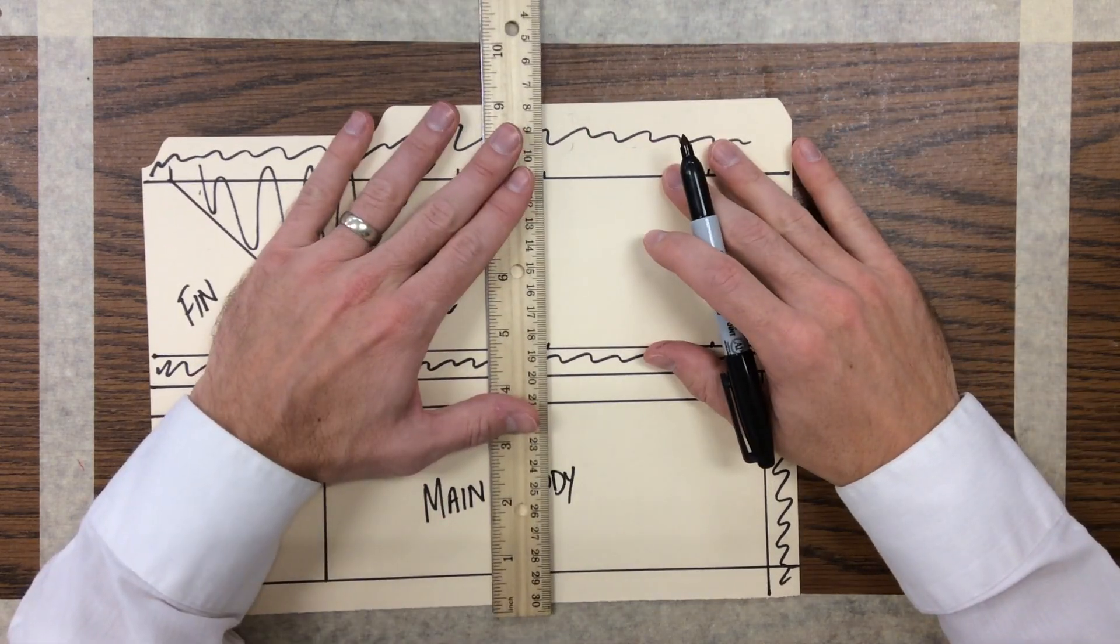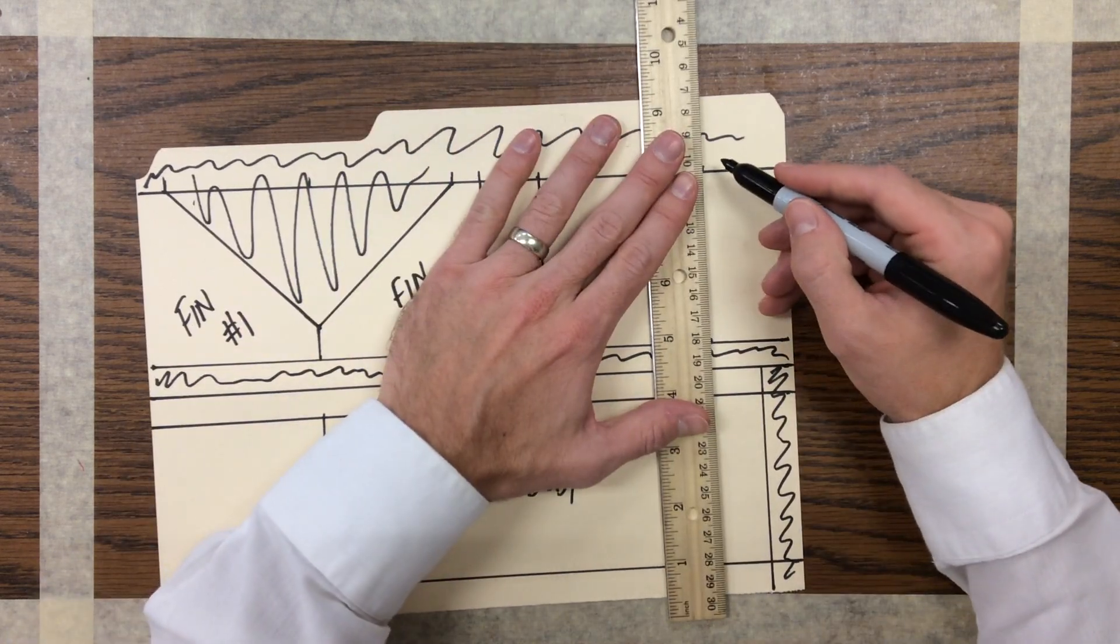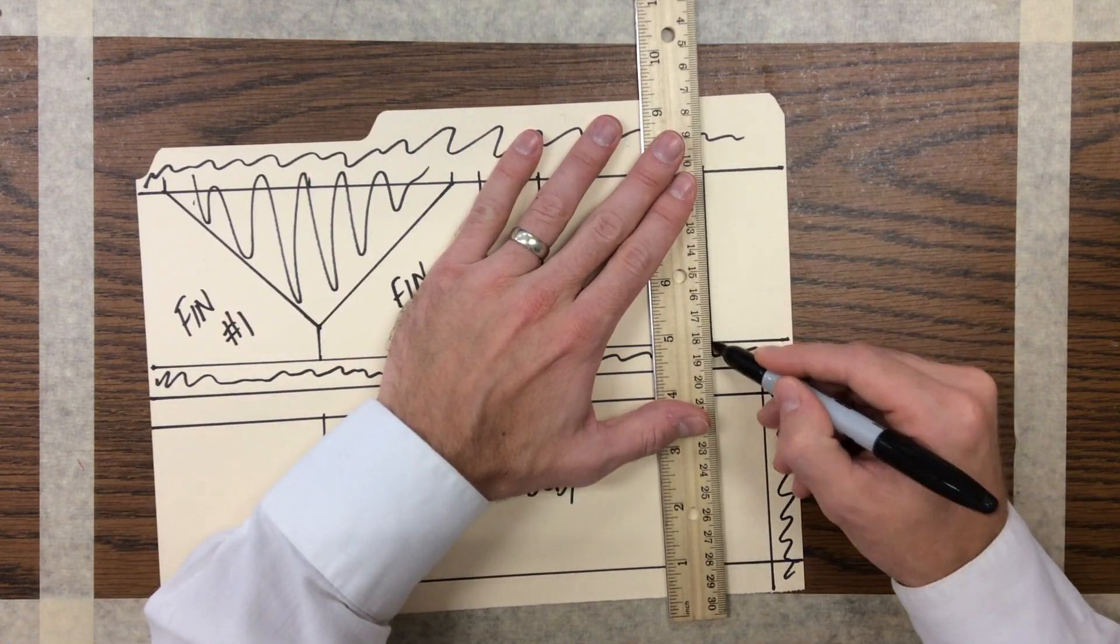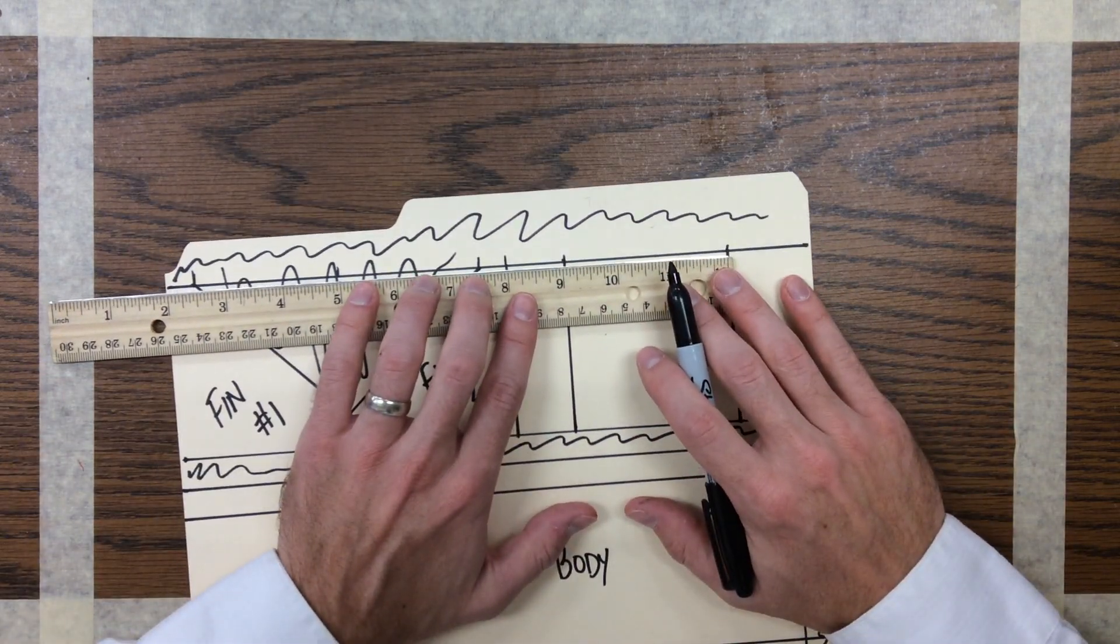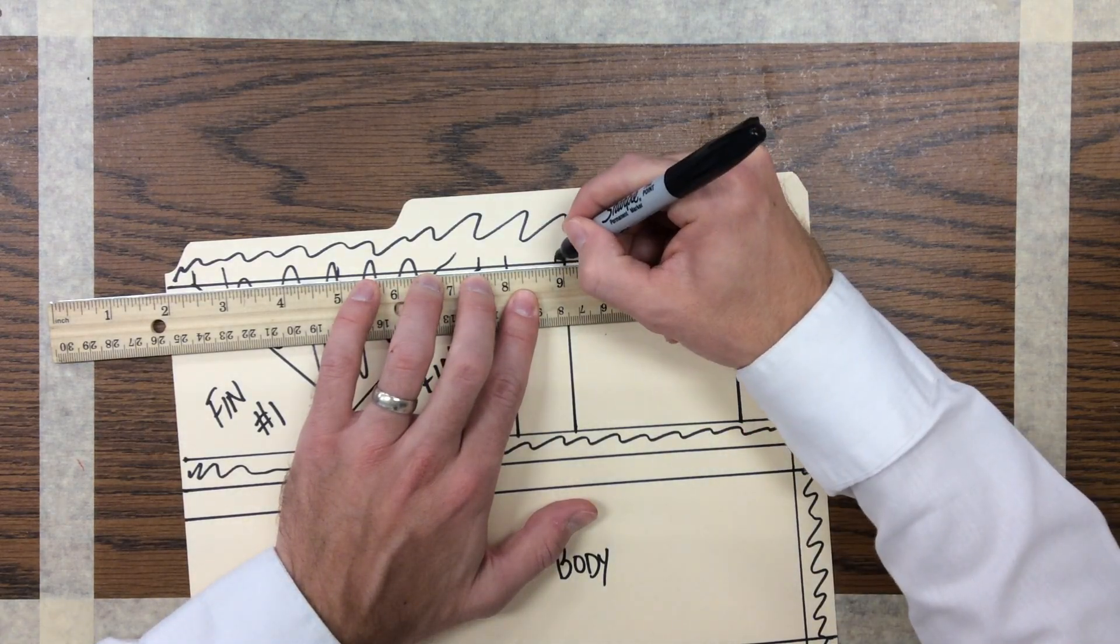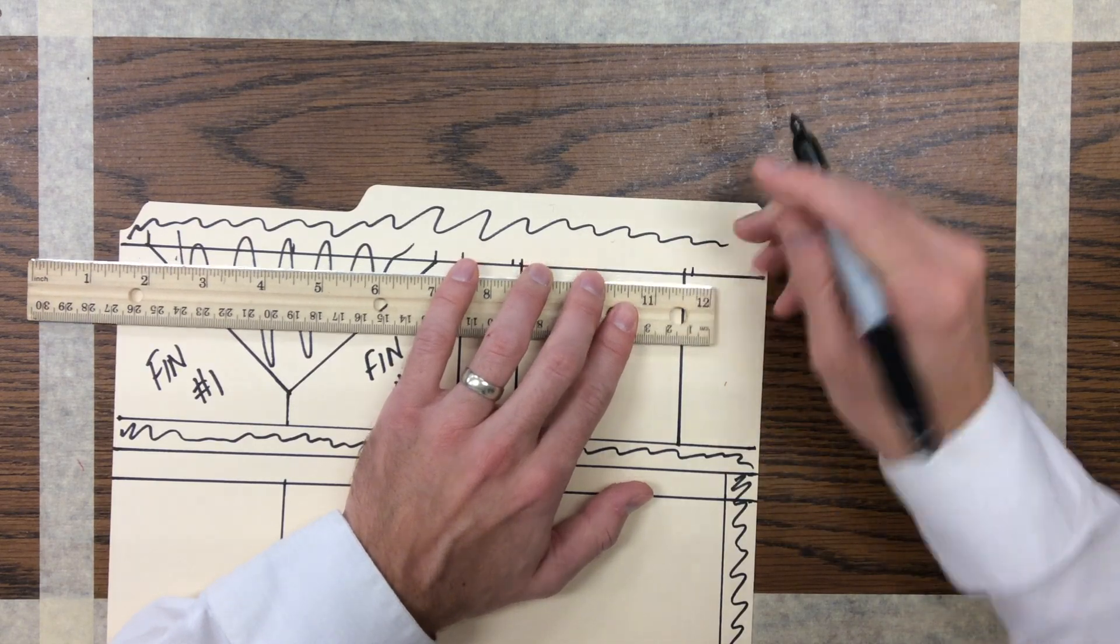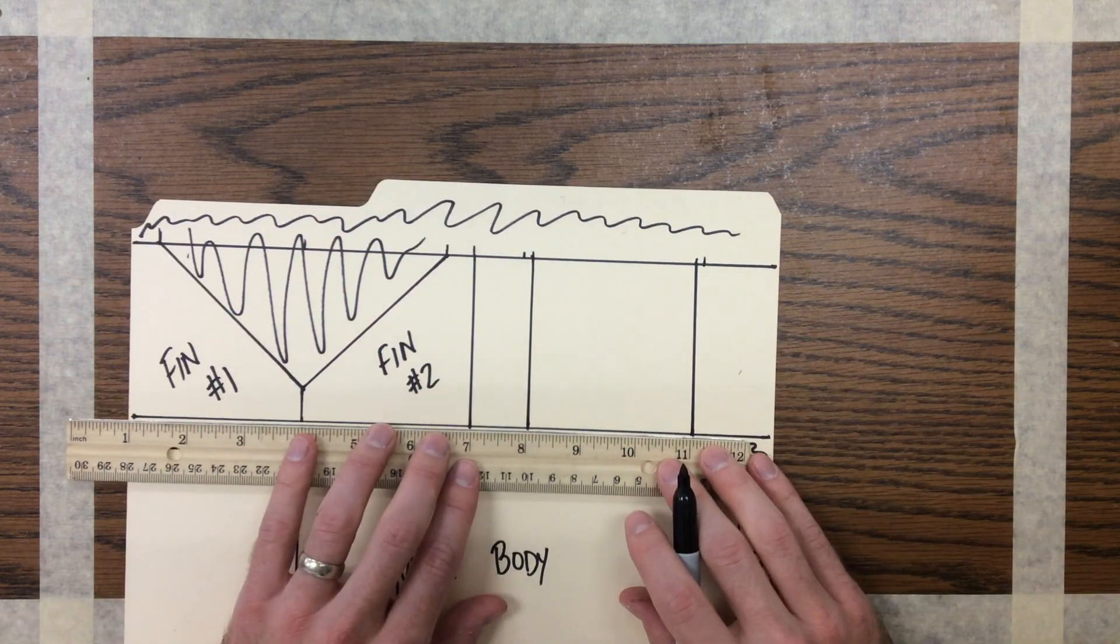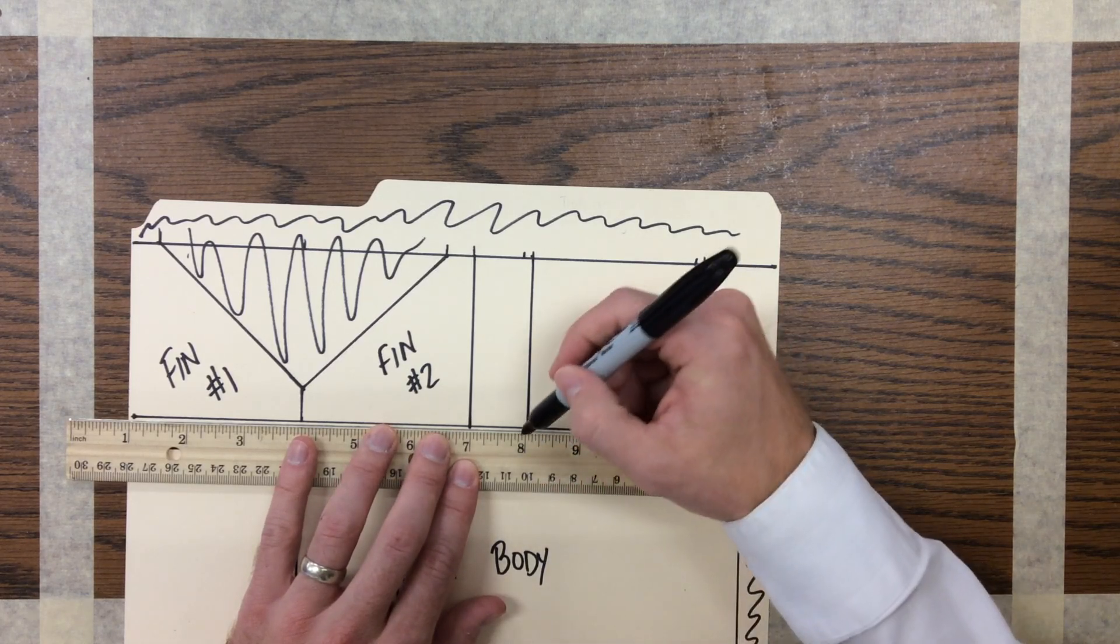I can connect those dots straight down so I have a square, and then I'm going to measure one-eighth of an inch at the top. One-eighth of an inch is two of those little lines on the ruler. One-eighth of an inch at the top, and then three-eighths of an inch at the bottom, which is six little lines on the ruler.